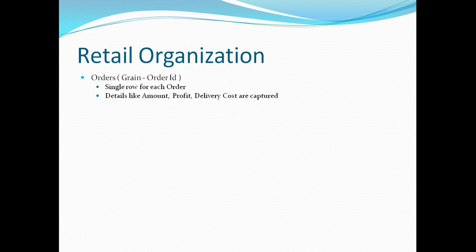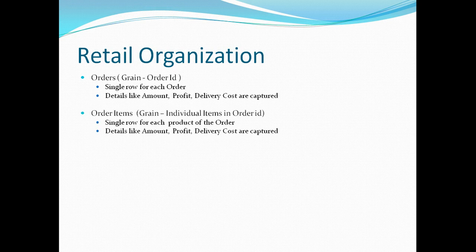We also maintained an order item table. As part of a particular order, a customer can buy 10 or even 100 products. The grain of this table is individual items within an order ID — one row for each product in the order. It will therefore have more rows than the order table. We capture the same KPIs here: revenue generated per product sale, profit generated, and the delivery cost associated with that product sale.